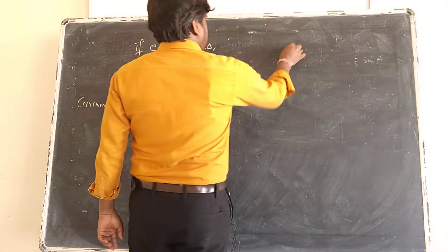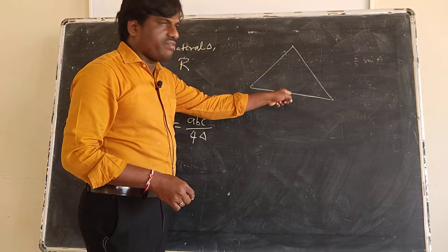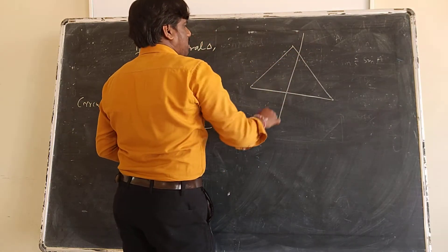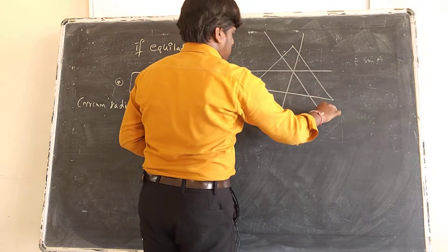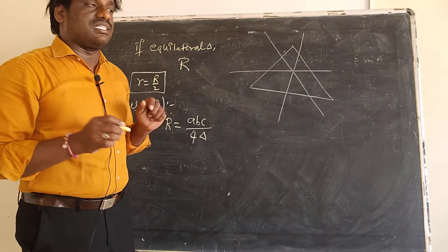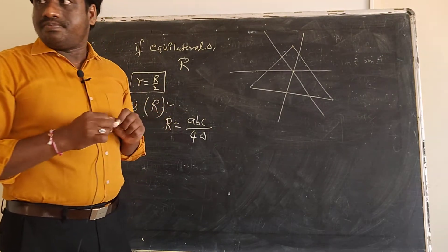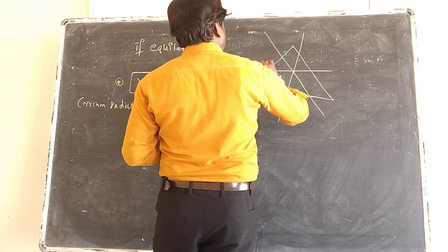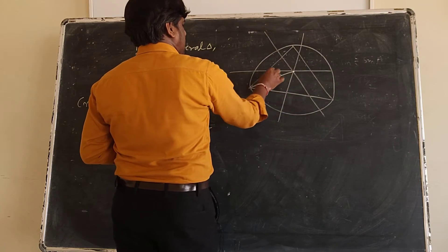What is circumradius? Circumradius means you have a triangle and you draw the perpendicular bisector of each side. The intersecting point of the perpendicular bisectors of the sides gives you the circumcenter. The circle drawn from this center is the circumscribed circle, and this length is called capital R.